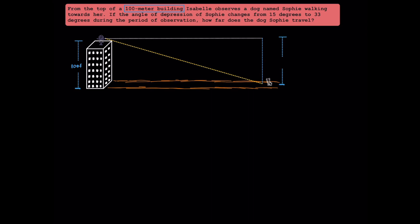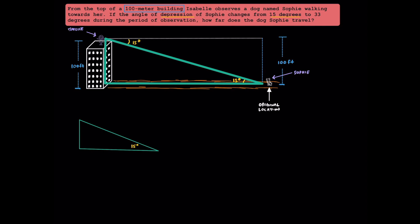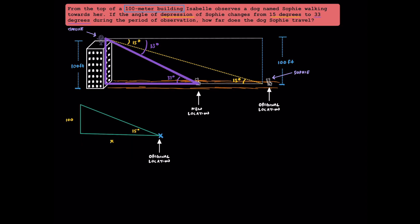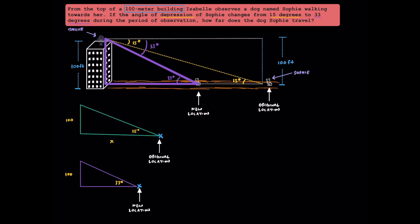Since we know we have a 100-foot building here, I'm going to label that right over here to the left, and that's going to be the same vertical distance over here to the right. Here's Isabelle and Sophie. This is Sophie's original location, and the angle of depression is 15 degrees. Due to alternate interior angles, this angle is also 15 degrees. Let's simplify this triangle — here's 15 degrees, here's our height of 100 feet, and this is going to be our horizontal distance that we don't know. This represents Sophie's original location. Since the angle of depression increased to 33 degrees, we know that Sophie got closer to Isabelle. This angle over here is also 33 degrees. Since Sophie is now closer to the building, I'm going to use a new variable to represent the horizontal distance. Let's call it y.